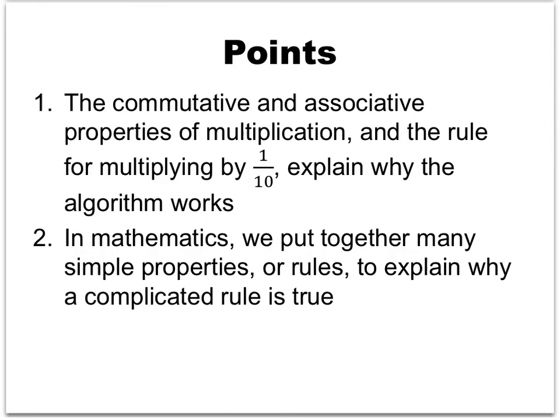To summarize, there are two important points from this explanation. First, the commutative and associative properties of multiplication, together with the rule for multiplying by 1 tenth, explain why the algorithm works. Second, this example illustrates a big idea in mathematics: we combine many simple properties or rules to explain why a complicated rule is true. We started with simple rules — multiplying by 1 tenth, commutativity, associativity — and used them to justify the algorithm.